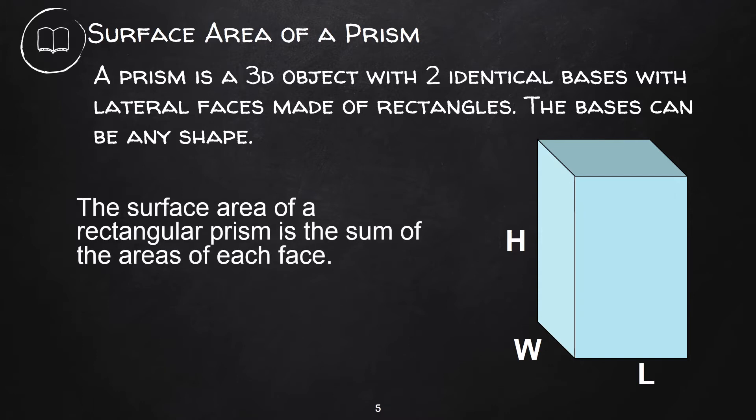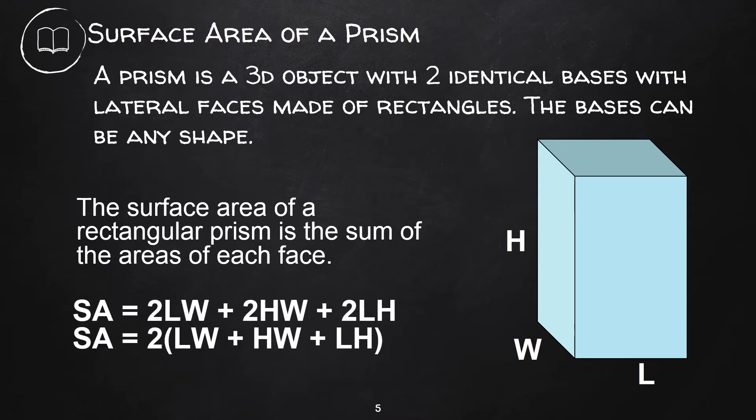The surface area of a prism is the sum of all the faces. We have four rectangular lateral faces and two bases. So, the surface area is described by the formula: 2(LW + HW + LH).